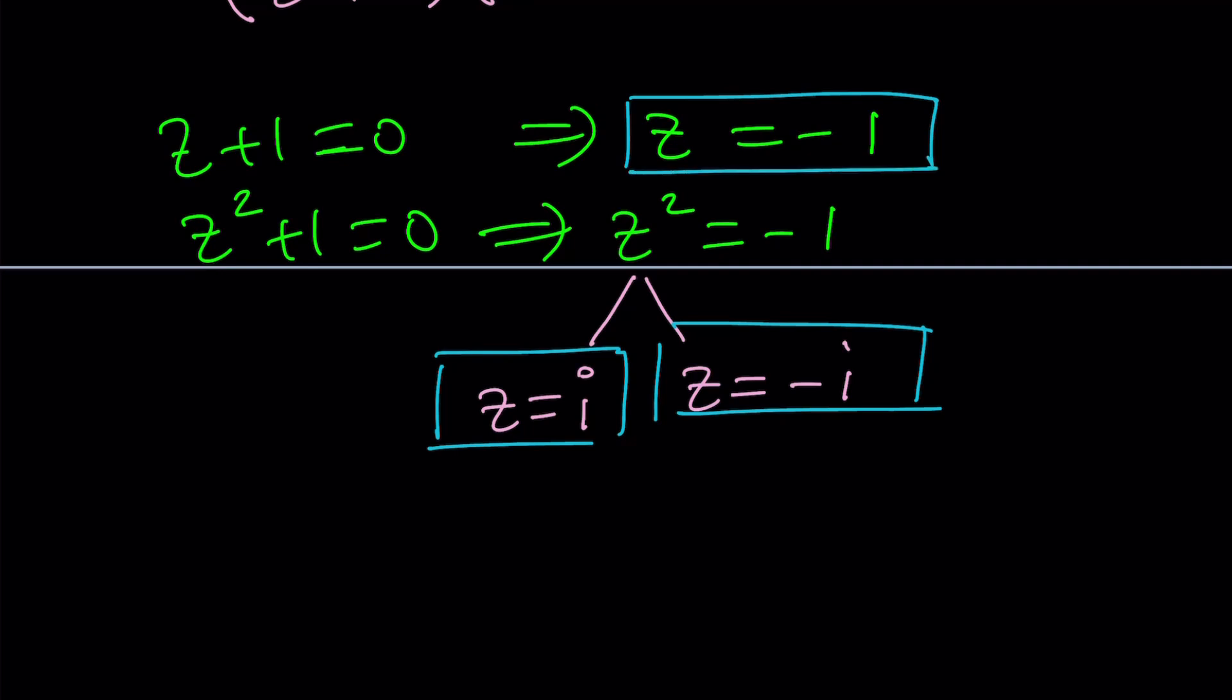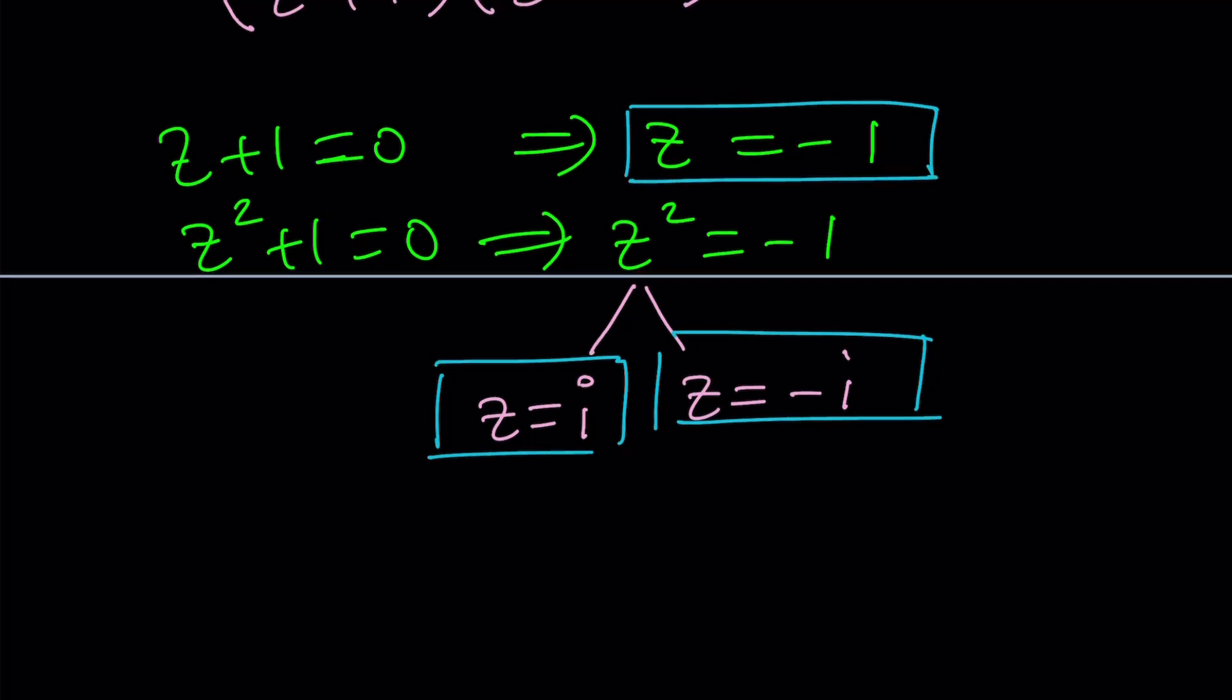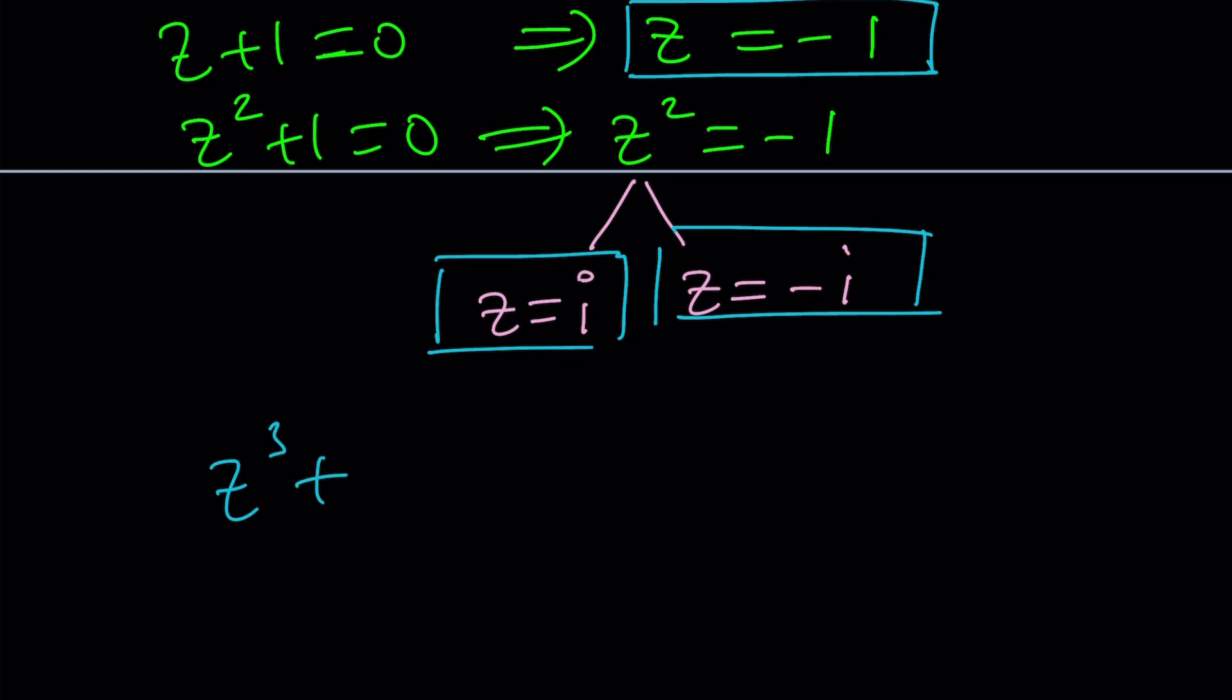Now you could definitely proceed a little differently once you realize negative 1 is a solution you could also do the following you could just do long division divide this by z plus 1 z goes into z cubed z squared times so on and so forth it's going to be the exact same thing not too hard it's pretty straightforward.